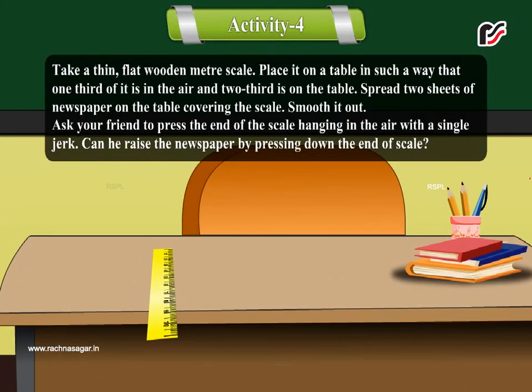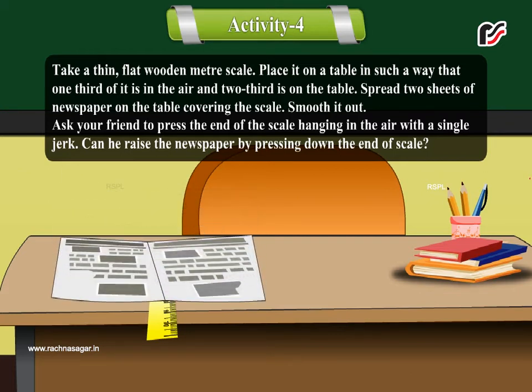Place it on a table in such a way that one-third of it is in the air and two-thirds is on the table. Spread two sheets of newspaper on the table covering the scale.